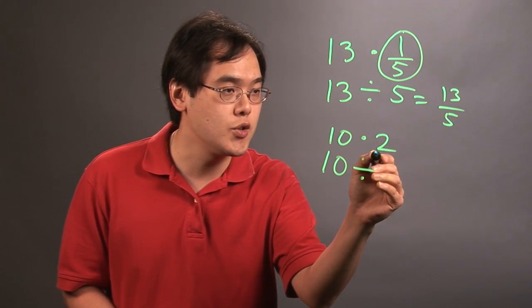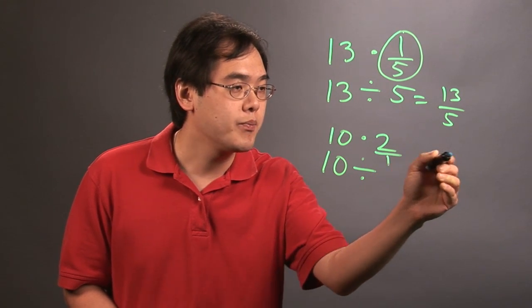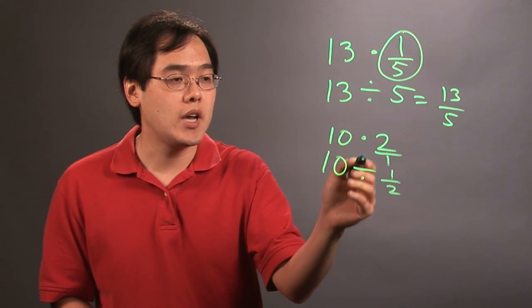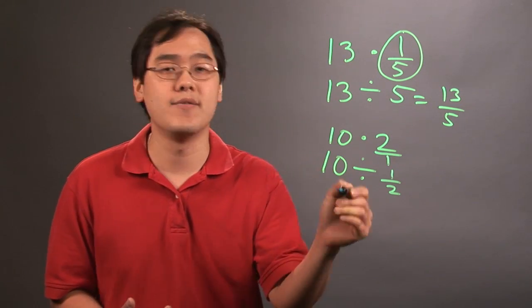So 2 can be thought of as 2 over 1. So the reciprocal of 2 over 1 is going to be 1 half. So 10 times 2 is the same thing as saying 10 divided by 1 half.